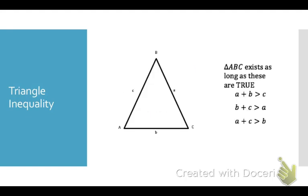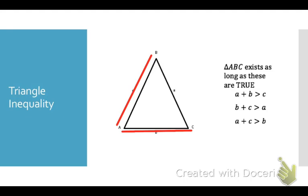For triangle ABC to actually exist, these three inequality statements must all be true: the length of side A plus side B is greater than side C; side B plus side C is greater than side A; and side A plus side C is greater than side B.